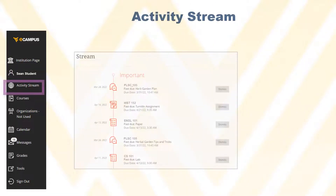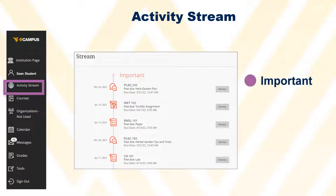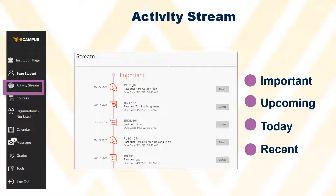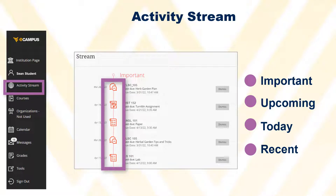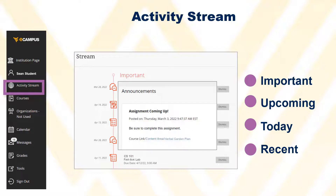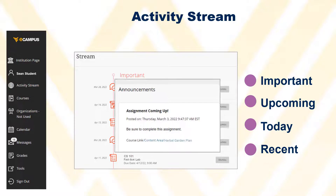The activity stream lets you jump directly into course actions. The stream is divided into Important, Upcoming, Today, and Recent. Different icons represent tests, assignments, and announcements. Clicking an item takes you directly to that item.